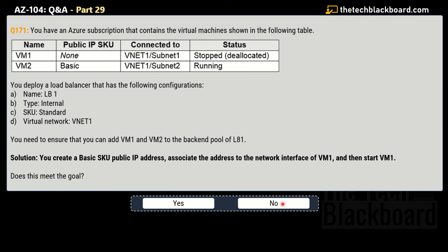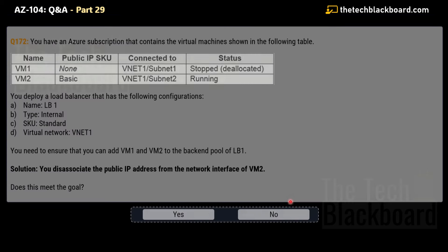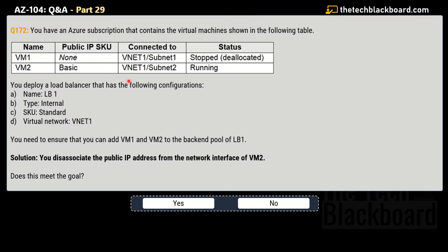Question 172 is one more variation of the same question. The solution here says: you disassociate the public IP address from the network interface of VM2. Does this solution meet the goal? Once again, this is an incorrect solution, so No is the correct answer. Please wait for two more variations and then I will give the correct reasoning and associated documentation.